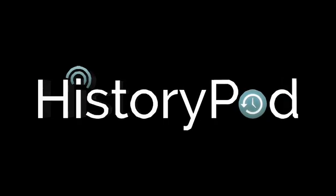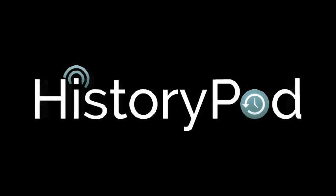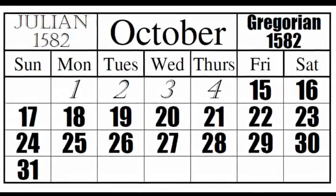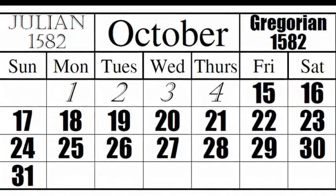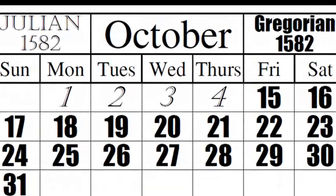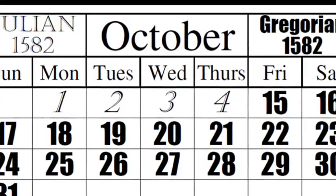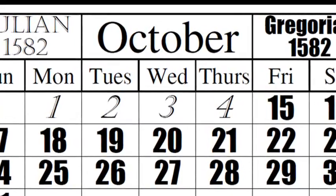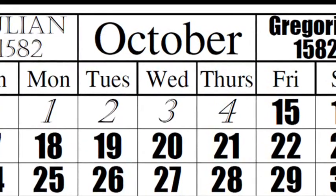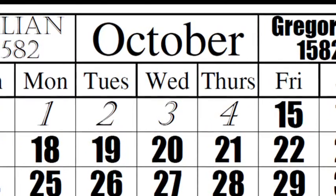Hello and welcome to HistoryPod. On the 4th of October 1582, Pope Gregory XIII implemented the Gregorian calendar.